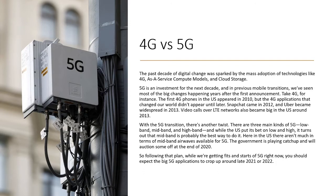Now 4G first appeared on US phones back in 2010, and then it took a couple of years before actual 4G applications started to come out. Snapchat came in 2012, and then Uber became widely popular in 2013. We also saw video calls being popularized.